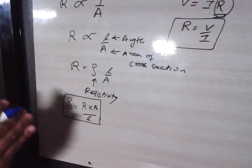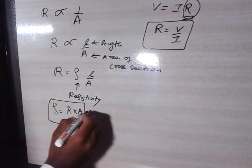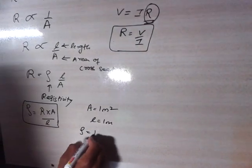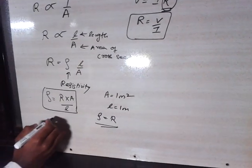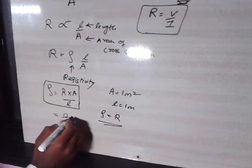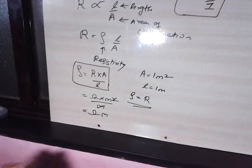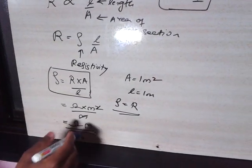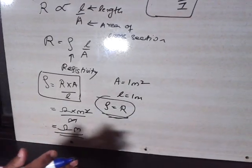Let me explain the difference between resistivity and resistance. If we set A equal to one meter squared and L equal to one meter, then ρ = R × 1 / 1, so ρ equals R in magnitude. The SI unit of ρ is: R is in ohms, area is in meter squared, length is in meters — the meters cancel — so the SI unit of resistivity is ohm·meter. Please keep this in mind.